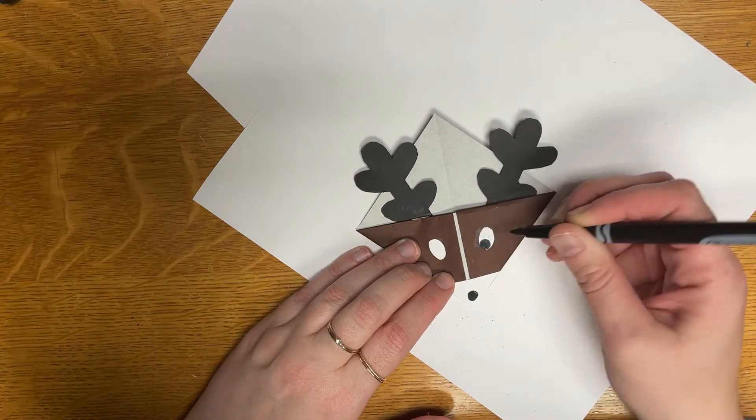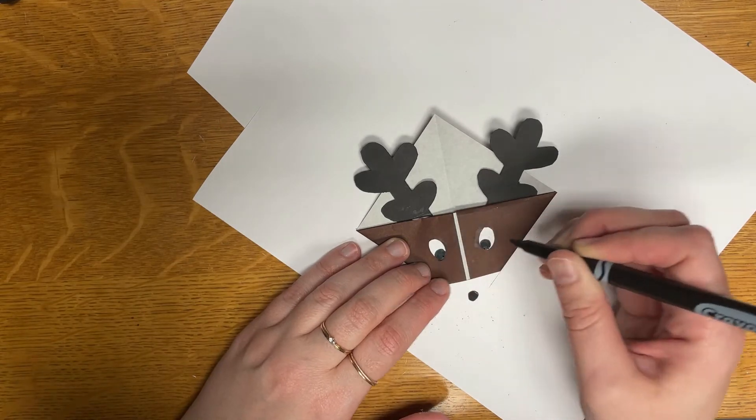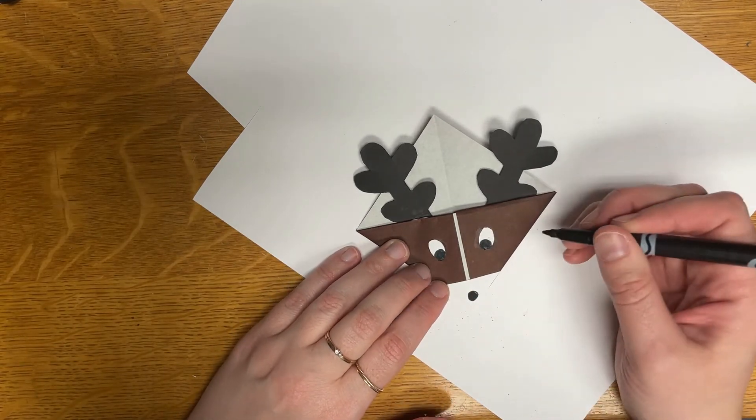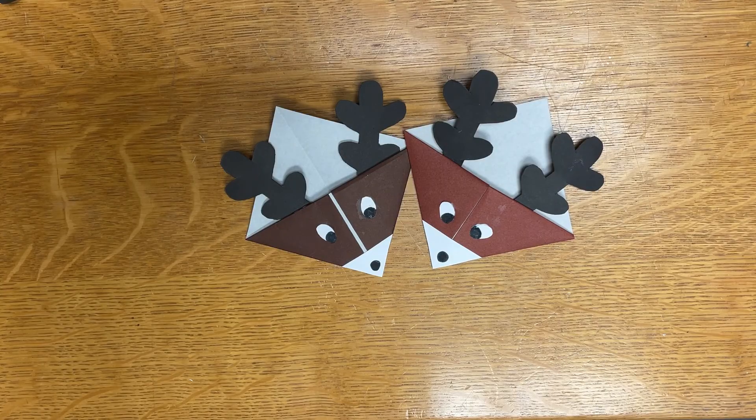Give him a nose and some pupils for his eyes. If you're feeling fancy, you can put a little dot of white in there to make his eyes look more three-dimensional, but we don't care. And if you want Rudolph, just change his nose color. Here we go.